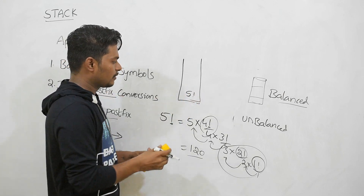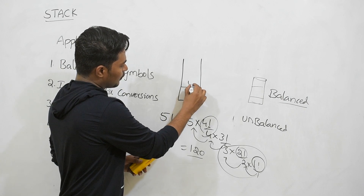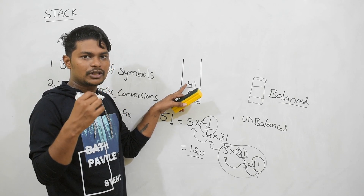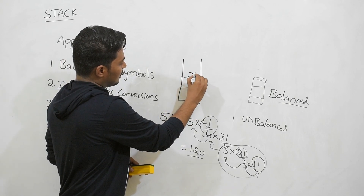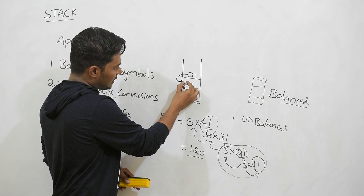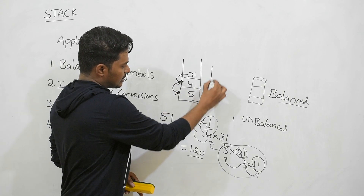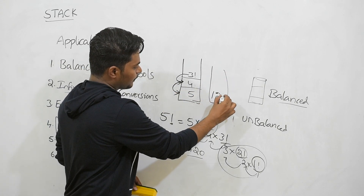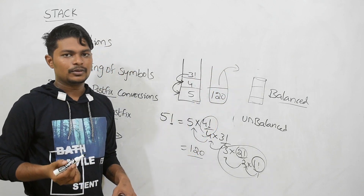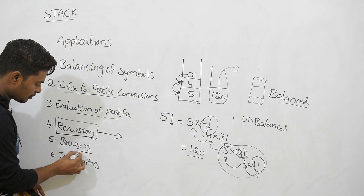Using a stack to explain recursion: for finding 5 factorial we push 5 into 4 factorial, then 4 into 3 factorial, and so on. Once the base case returns, 3 factorial returns its value, then 4 factorial, and finally the stack holds 120, which is the returned result. I will explain this in more detail in the next videos.